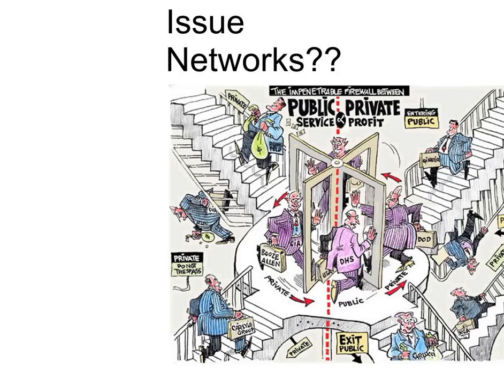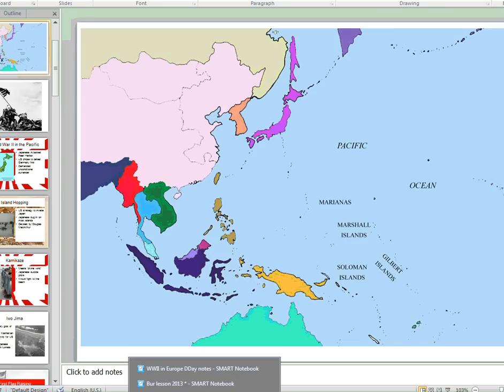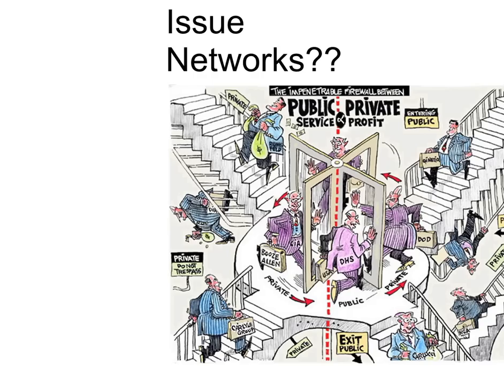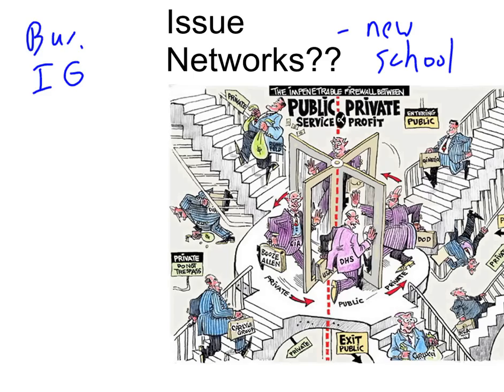What we have now is what's called an issue network. Issue networks are a little more complex. They include the three components of the Iron Triangle — your bureaucracy, your interest groups, and your congressional committee — but there are more stakeholders and more people involved. An issue network describes the same thing an Iron Triangle does, just with more players and more components.